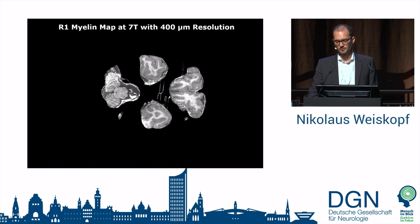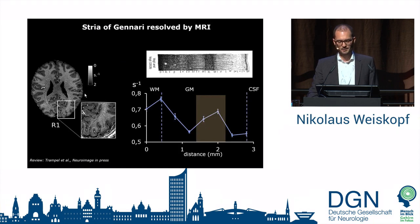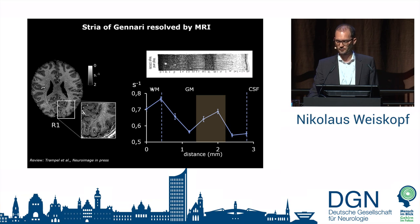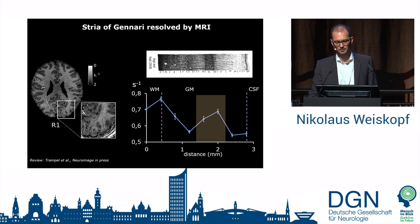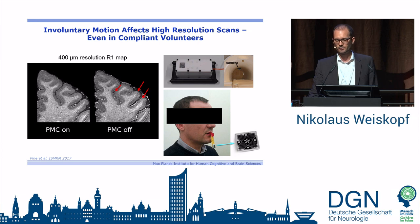Here is the Stria of Gennari — the highly myelinated band in the primary visual cortex, exactly as expected. You can see the white ribbon quite nicely, which lies within the cortex. In a depth profile, going from white matter inward, myelination reduces, then goes up at the line of Gennari and goes down again — exactly what you would expect from anatomy. We are getting there with MRI, with a non-invasive technique, though only by improving the technology further.